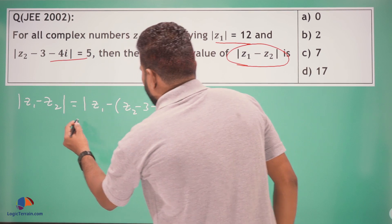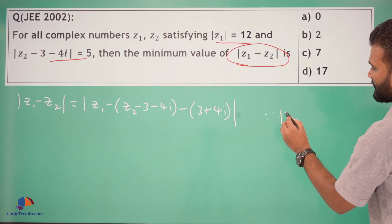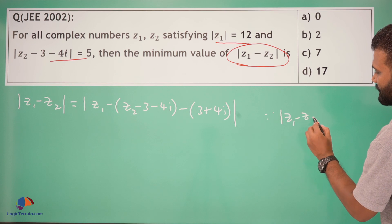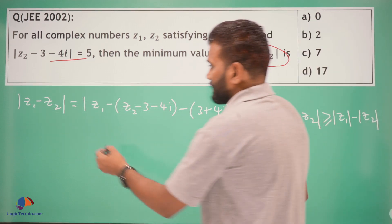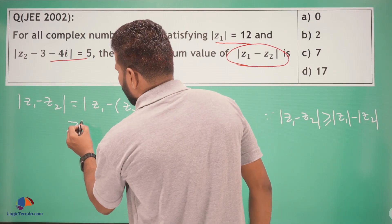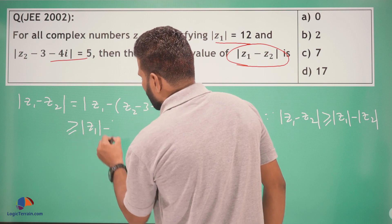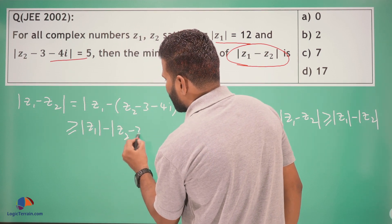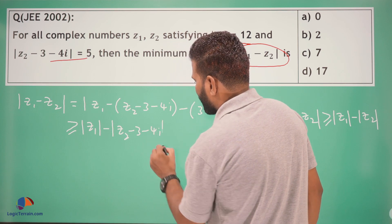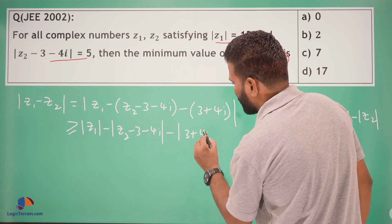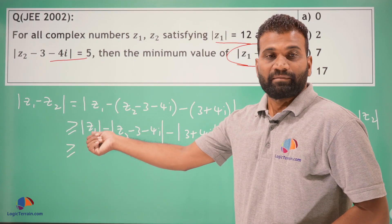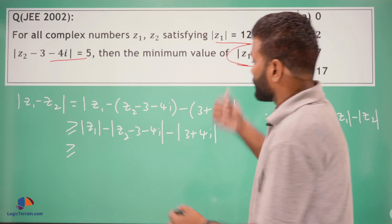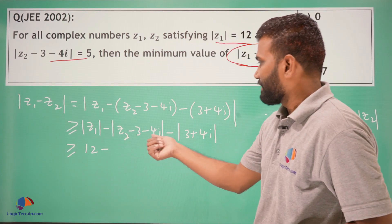So we know that modulus of Z1 minus Z2 is greater than or equal to modulus of Z1 minus modulus of Z2. This becomes greater than or equal to modulus of Z2 minus 3 minus 4i minus modulus of 3 plus 4i, which is greater than or equal to modulus of Z1 minus 12 minus 5.